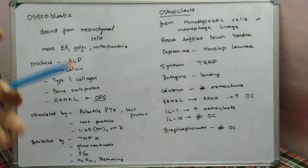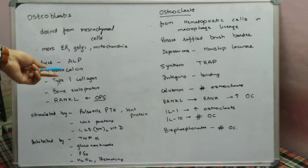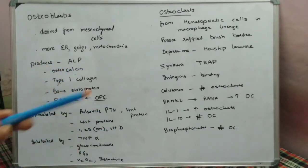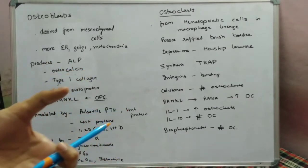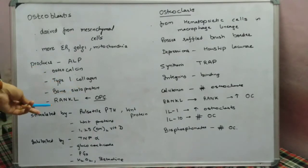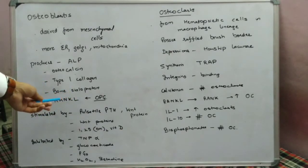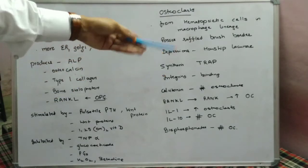Because they lead to production of the basic bone matrix, osteoblasts produce alkaline phosphatase, osteocalcin (which is stimulated by 1,25-vitamin D), type 1 collagen (which is the basic bone matrix), and bone sialoprotein. They also produce RANK ligand, which attaches to the RANK receptor located on osteoclasts and increases osteoclast production.